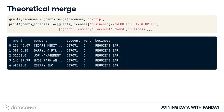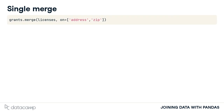If instead we merge on address only, there's a small risk that the address would repeat in different parts of the city. Therefore, the best option is to merge the tables using the combination of both address and zip code. We merge the two data frames as shown before, except in this case we pass a list of the column names we want to merge on to the on argument. This allows us to use multiple columns in the merge.